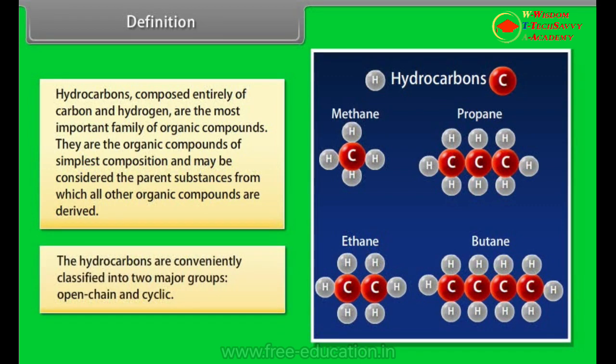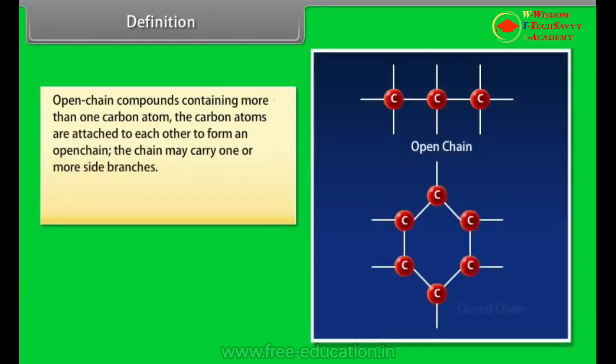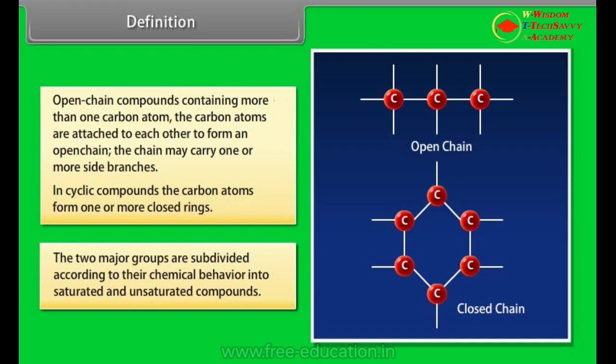The hydrocarbons are conveniently classified into two major groups: open chain and cyclic. Open chain compounds containing more than one carbon atom, the carbon atoms are attached to each other to form an open chain. The chain may carry one or more side branches. In cyclic compounds, the carbon atoms form one or more closed rings. The two major groups are subdivided according to their chemical behavior into saturated and unsaturated compounds.